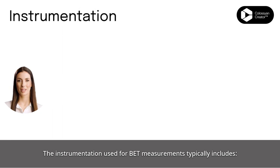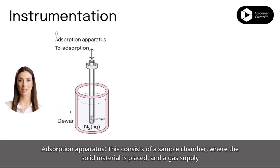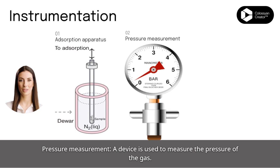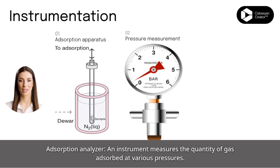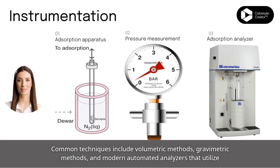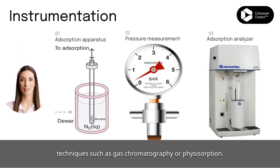The instrumentation used for BET measurements typically includes an adsorption apparatus consisting of a sample chamber where the solid material is placed, and a gas supply system for introducing the adsorptive gas. A pressure measurement device is used to measure the pressure of the gas. An adsorption analyzer measures the quantity of gas adsorbed at various pressures. Common techniques include volumetric methods, gravimetric methods, and modern automated analyzers utilizing gas chromatography or physisorption.